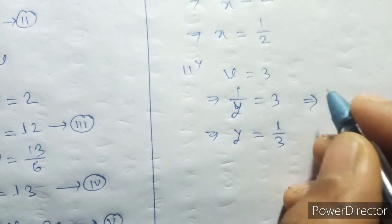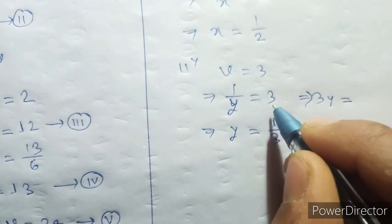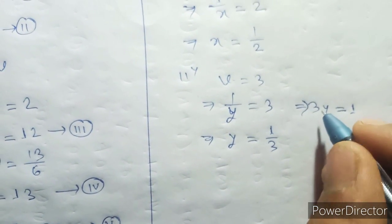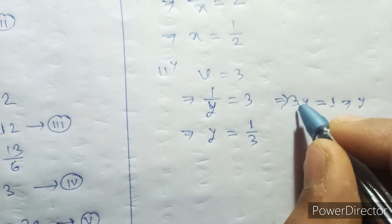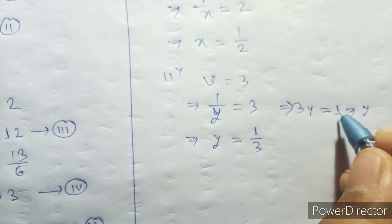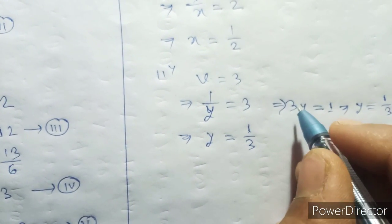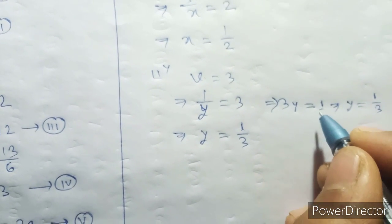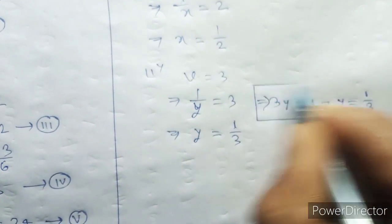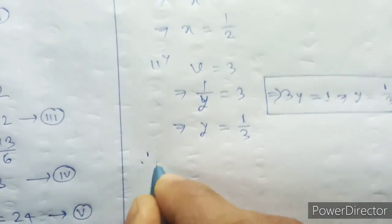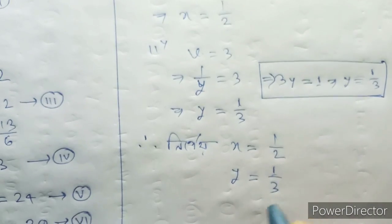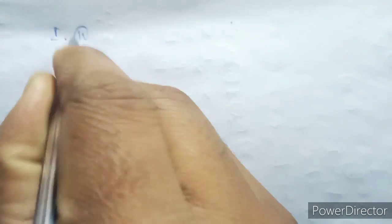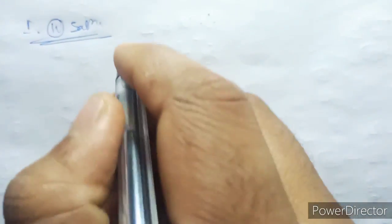So the solution is X equal to 1 by 2 and Y equal to 1 by 3. This is the solution for problem number 1.